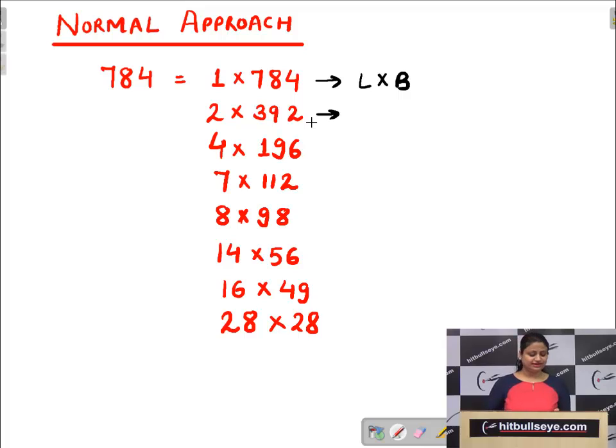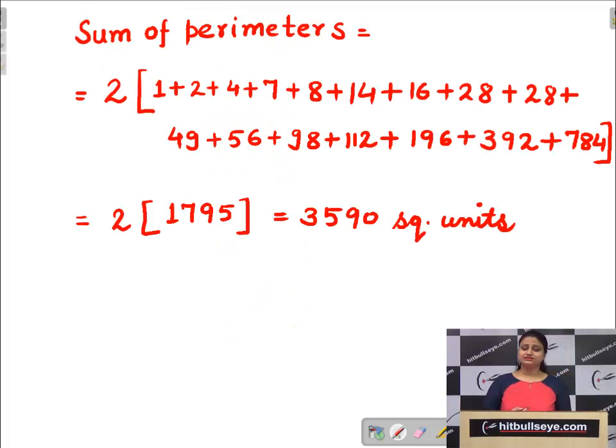You will write down all the possible cases. Then you will take sum of all the perimeters. If we have a rectangle whose area is L into B, what is the perimeter formula? That is twice of L plus B. So by applying this formula, you will calculate this and in the end you will get the answer 3590. That is a huge approach.